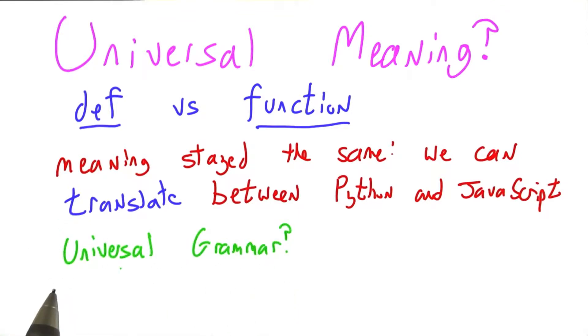In linguistics, people will sometimes talk about a universal grammar. Is there maybe some grammar that would sit behind and describe Python, JavaScript, English, and French? I don't want to get into that for natural languages,